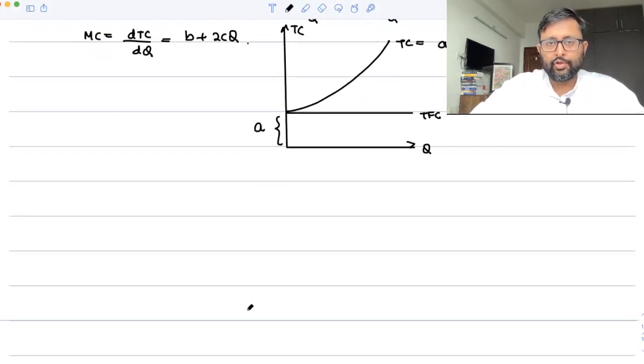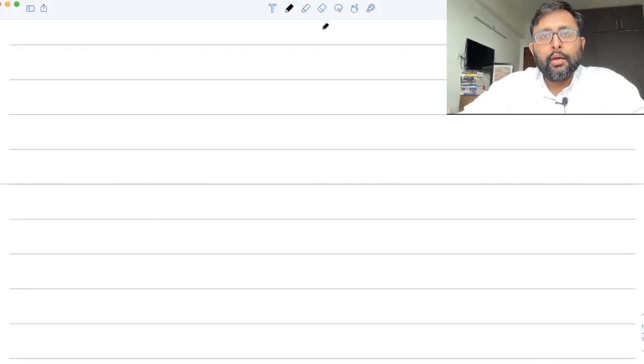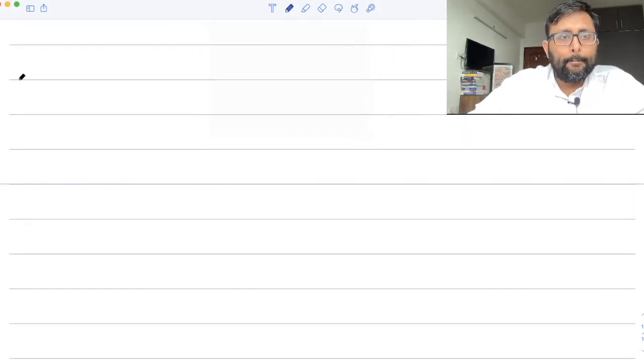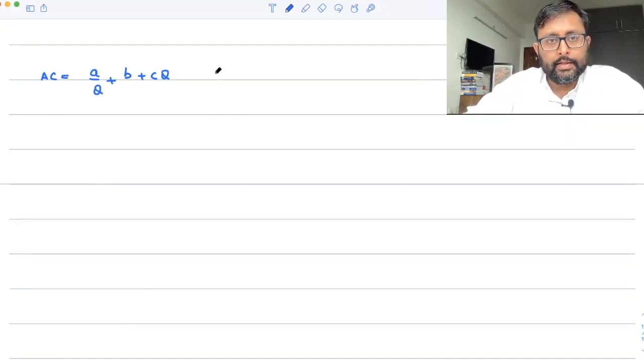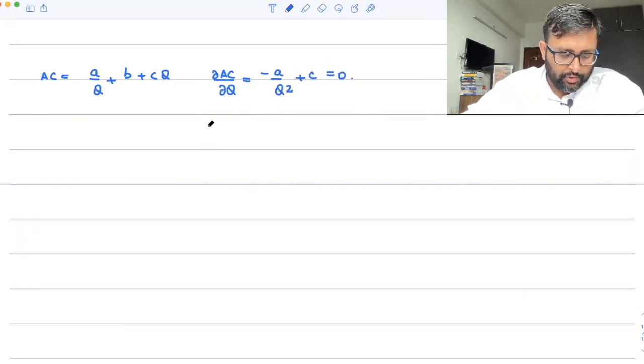Now come back to AC, which you have just derived: AC = a/q + b + cq. So let us find out the critical point for AC. Your dAC/dq is -a/q² + c = 0. So you have what? a/q² = c.